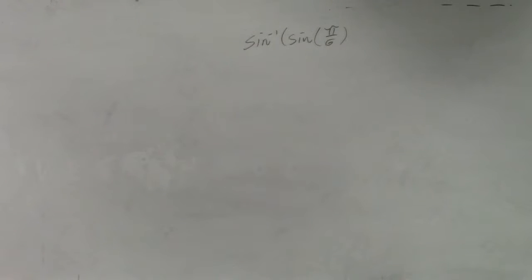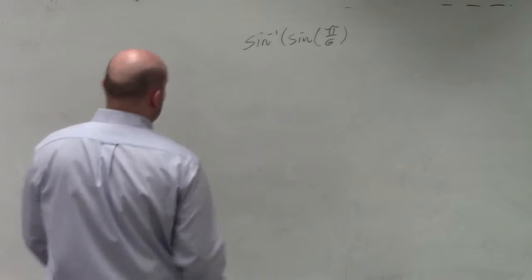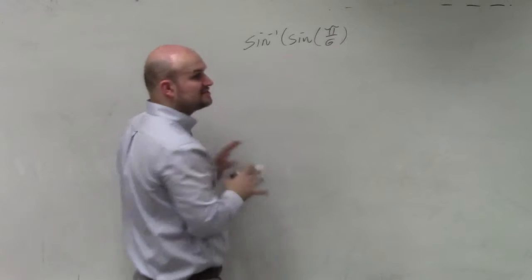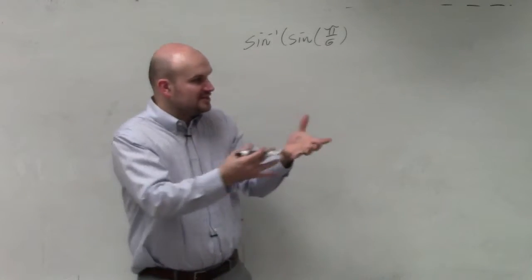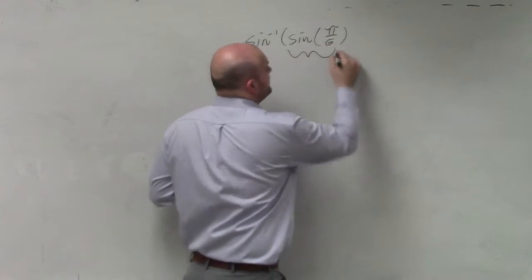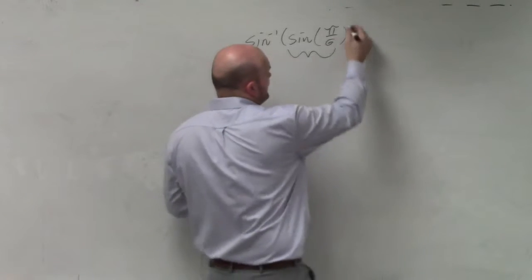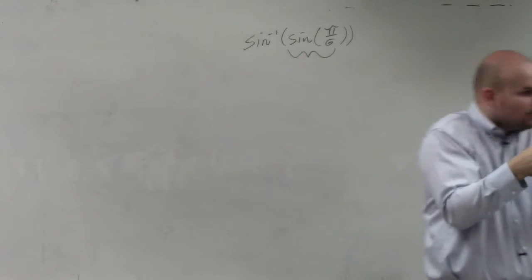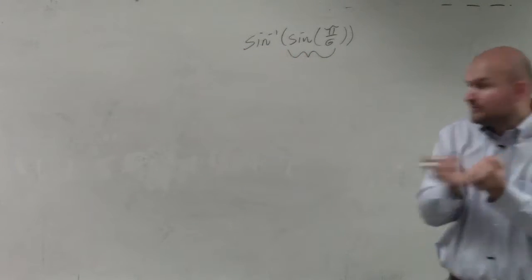I'll go over that and show you again on your calculator. First thing is sine of pi over 6. When you're doing these problems, always do the innermost in parentheses first, just like order of operations. Do the innermost problem first.